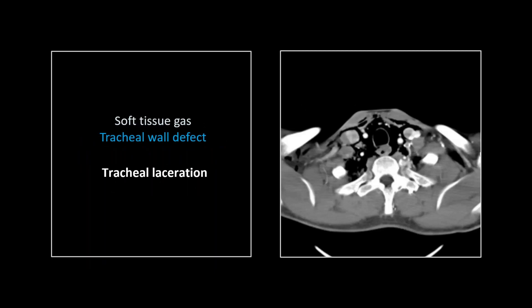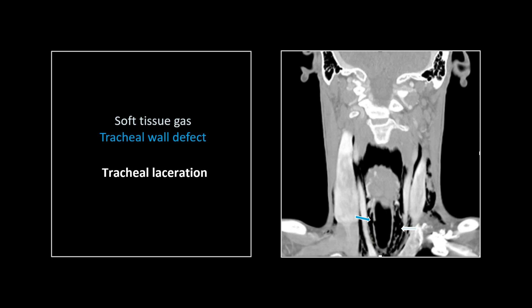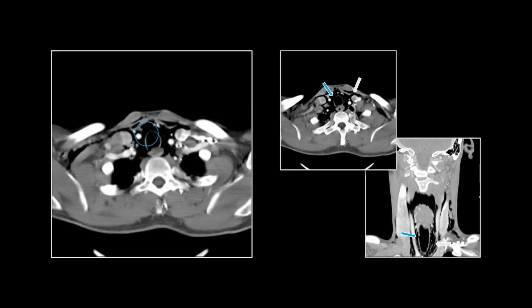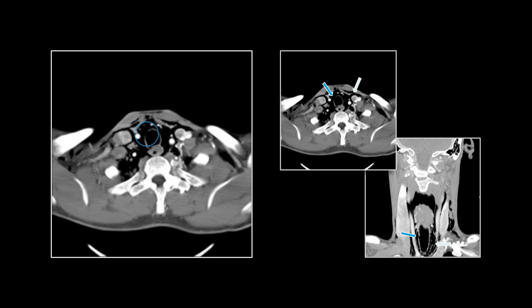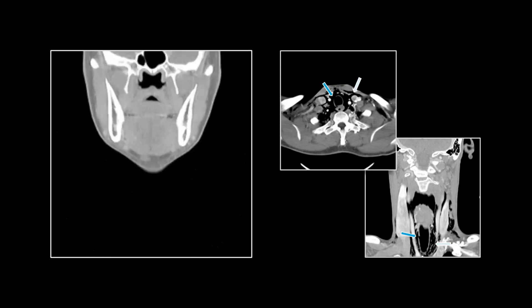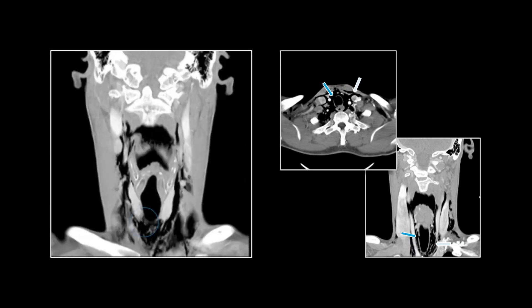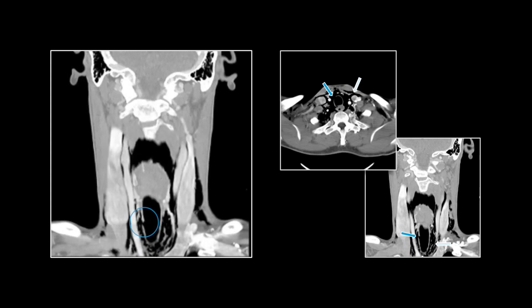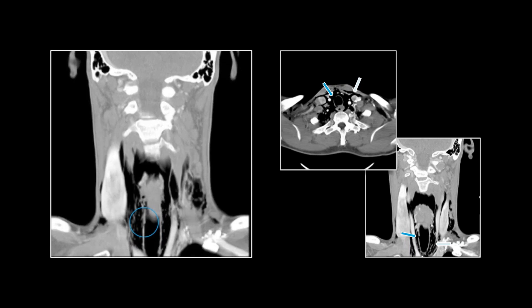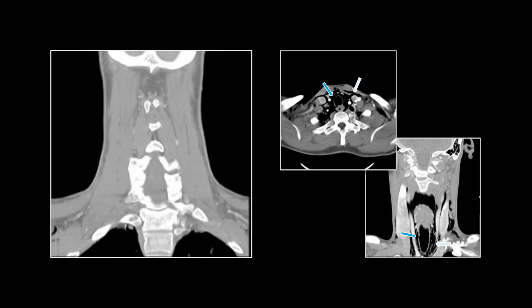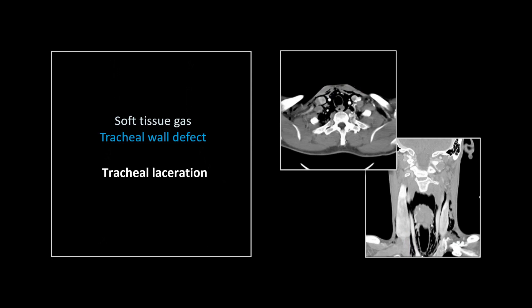This is pretty straightforward — just to encourage you to look at all planes and on all windows. This is a tracheal laceration. You can see there's gas all throughout the neck, but it's pretty hard to appreciate the tracheal wall defect on the axials. When you go to the coronals, there it is — it's lying in the axial plane, but there's clear disruption of the trachea. This was done with a steak knife. Here's the axial showing that small incised wound, and beautifully shown on the coronal right there — the source of all that soft tissue gas. That's a tracheal laceration.